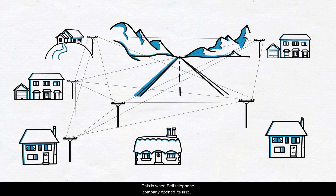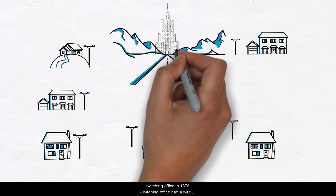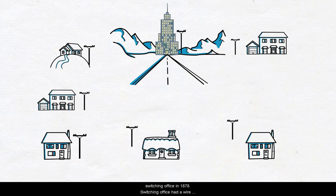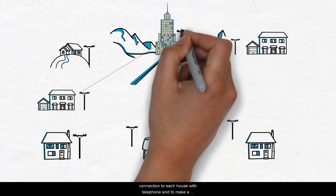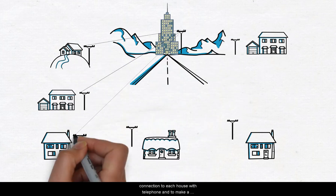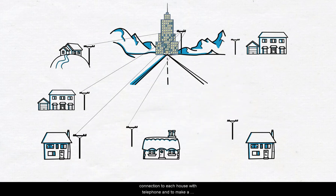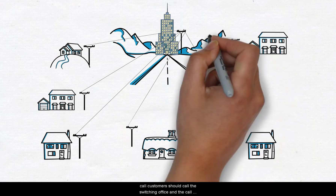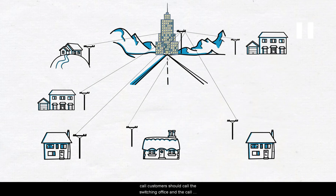This is when Bell Telephone Company opened its first switching office in 1878. The switching office had a wire connection to each house with a telephone, and to make a call, the customer would call the switching office and the call would be connected to the appropriate telephone manually.